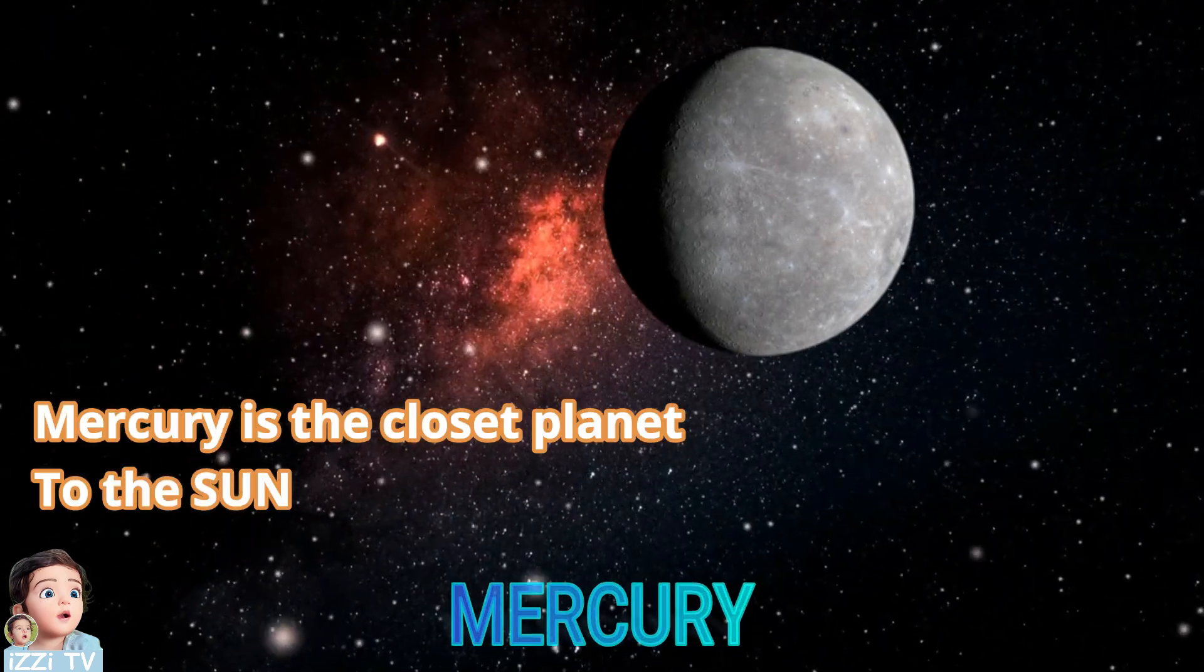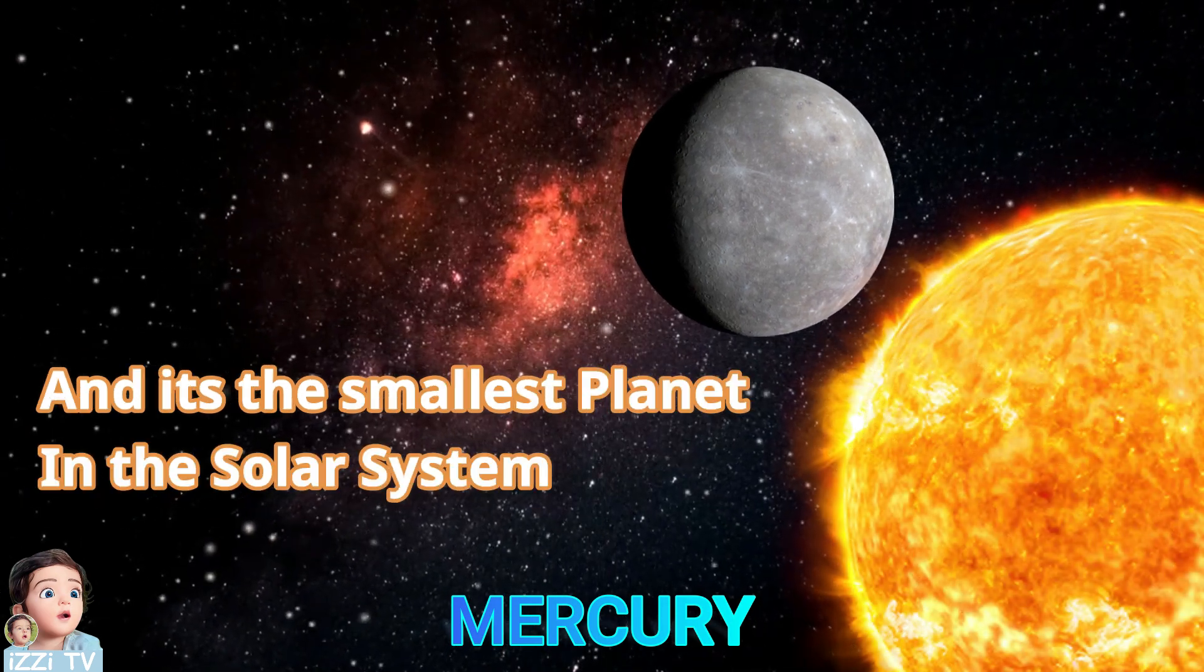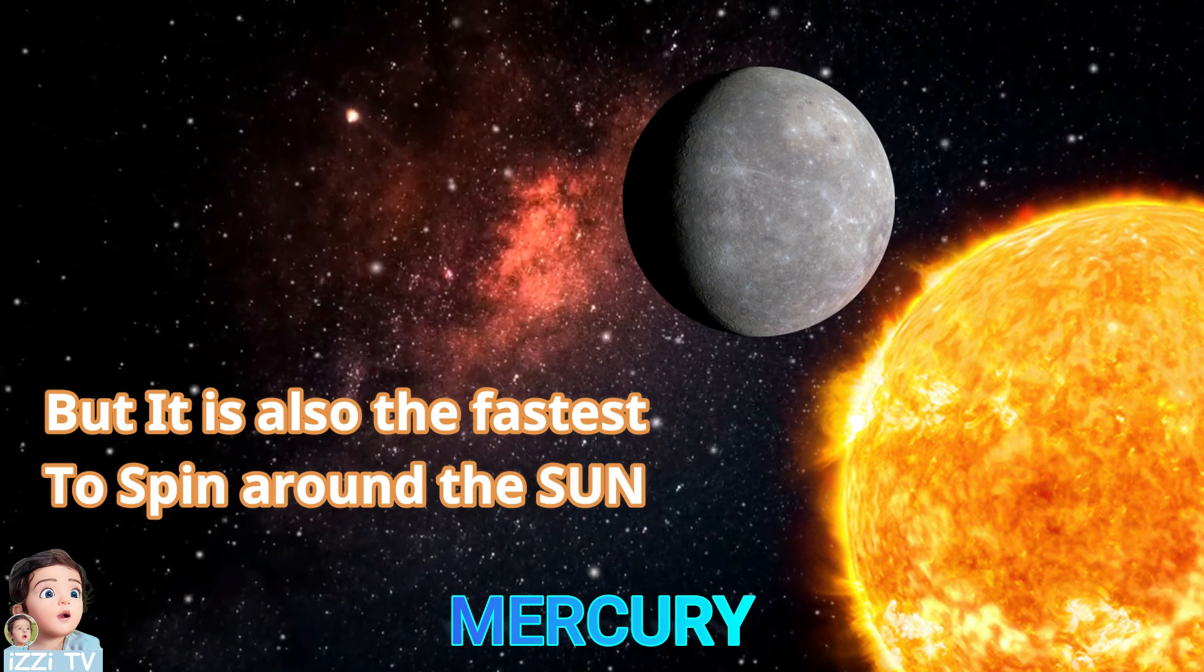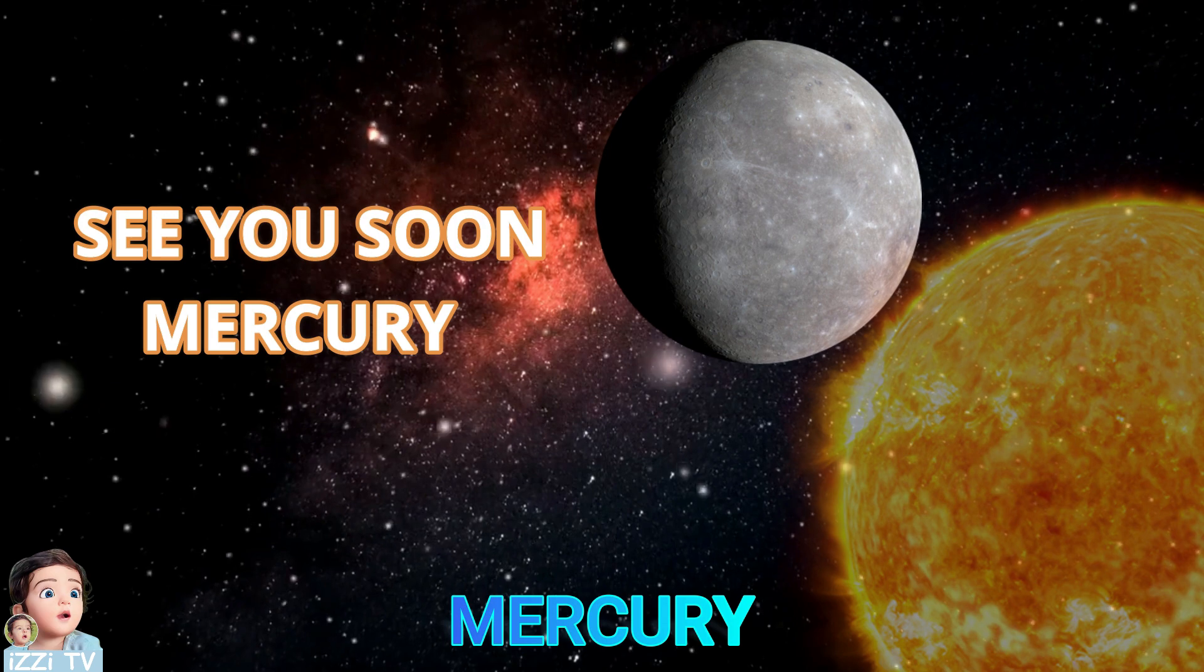Mercury is the closest planet to the sun and it's the smallest planet in the solar system. But it is also the fastest to spin around the sun. See you soon Mercury!